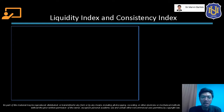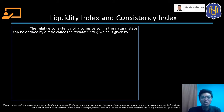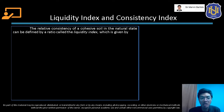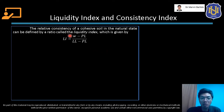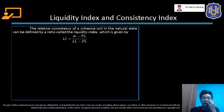Let's talk about the liquidity index and consistency index of cohesive soils. The relative consistency or firmness of a cohesive soil in the natural state can be defined by a ratio called the liquidity index. LI, our notation for liquidity index, is equal to W minus PL over LL minus PL, where W is the in situ moisture content of soil, PL is the plastic limit, and LL is the liquid limit.